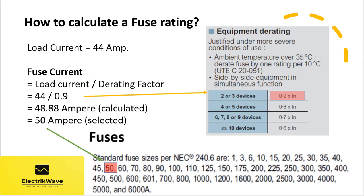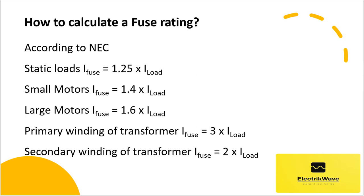Now let's calculate a fuse rating. Let's say load current is 44 ampere. Fuse current can be calculated based on load current and derating factor, as shown here. With load current of 44 ampere and a derating factor of 0.9 for three-phase or three-pole configuration, fuse current equals 48.88 ampere. As per standard fuse sizes given in NEC, we will select a fuse rating of 50 ampere.